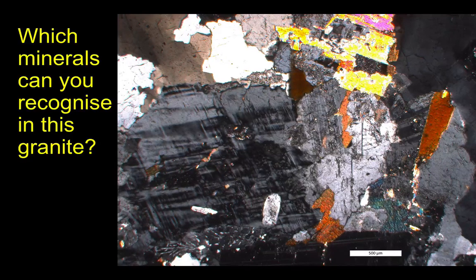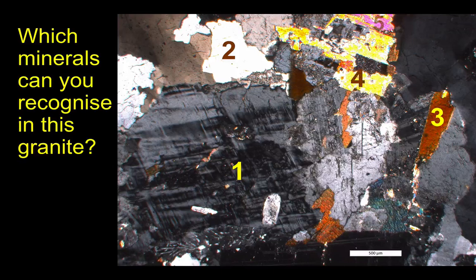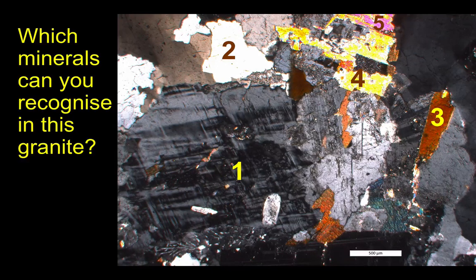So let's try and put this together. This is a thin section of a granite. You can see that there are several different minerals shown here. What I'd like you to do is try and recognise these — there are five different minerals to identify. Use the information from the video to see if you can identify these minerals. Bring your identifications along to class and I'll see you then.